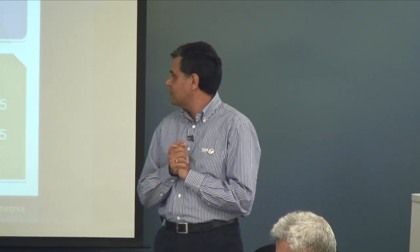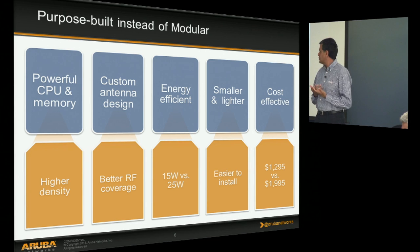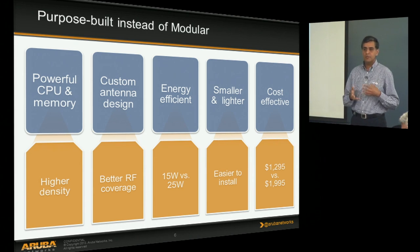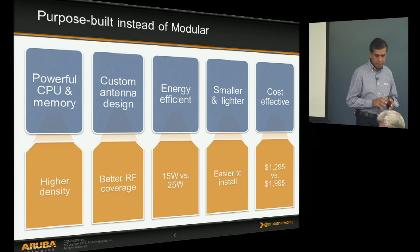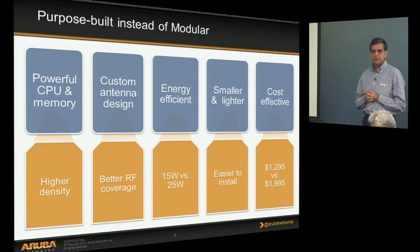Internally, the AP is purpose-built — the CPU was mated to the high-performance requirements of dual-radio AC, so it's not an 11N AP with a module added. Antenna design benefits from purpose-built layouts giving much better RF coverage. Because it is purpose-built, we reduced the power footprint to 15 watts versus 25 watts for modular devices, and we could make it smaller and lighter for easier deployment.